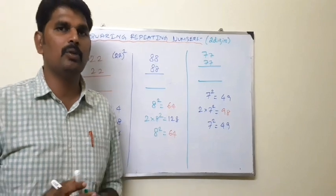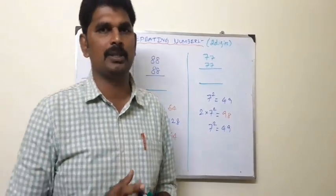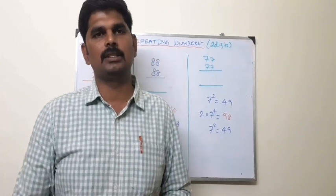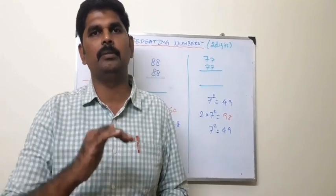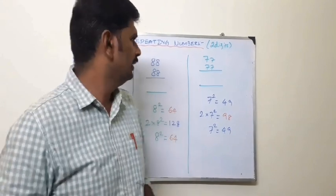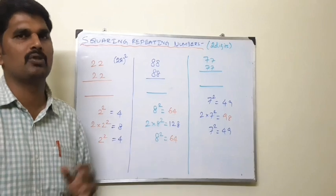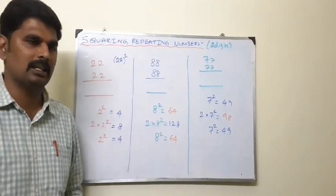In this session we have 3 digit repeating numbers, for example 333 whole square. These are 3 digit repeating numbers. In this session we will be discussing how to use Vedic Mathematics.